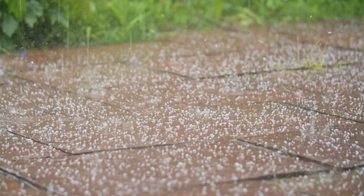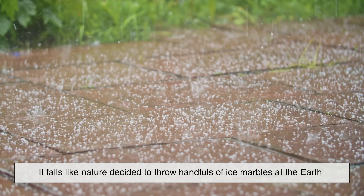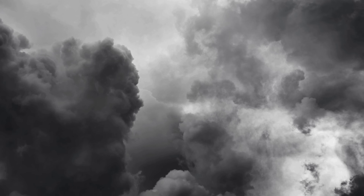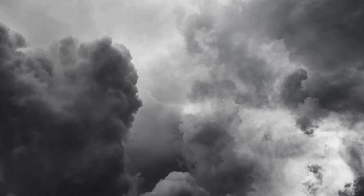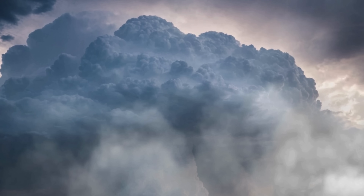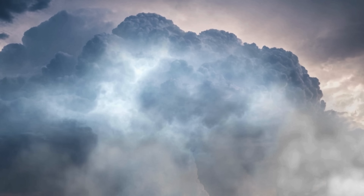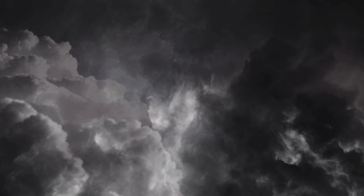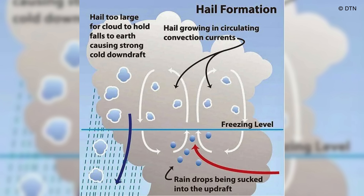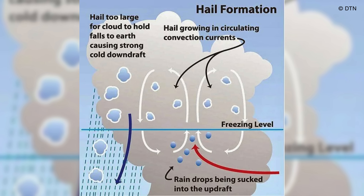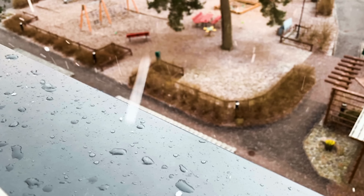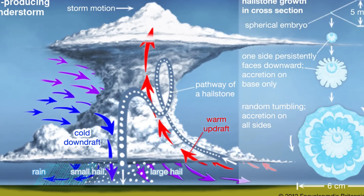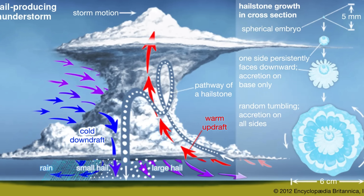Hail, on the other hand, has nothing peaceful about it. It doesn't drift. It falls like nature decided to throw handfuls of ice marbles at the earth. Hailstones form inside tall, powerful thunderstorm clouds, especially those called cumulonimbus clouds — the big, towering ones you see before intense weather hits. Inside these storms are strong updrafts, winds so powerful they can lift raindrops upward faster than gravity pulls them down. When raindrops get swept to the top of the storm, they enter regions so cold that the drops freeze instantly. Once they freeze, the updraft may push them up and down repeatedly, which causes the hailstone to collect new layers of ice every time it cycles through freezing or supercooled water. It's like building an onion made of ice.